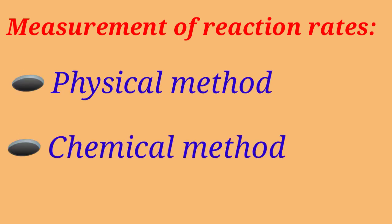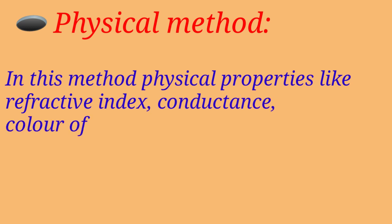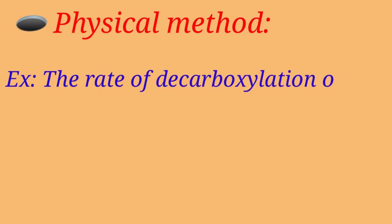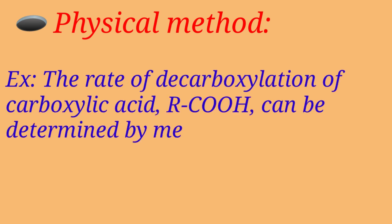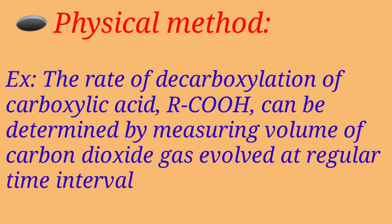Rate of reaction can be measured by two methods: physical method and chemical method. In physical method, physical properties like refractive index, conductance, color of reaction mixture, optical rotation, volume of gaseous product formed is measured at regular interval. For example, the rate of decarboxylation of carboxylic acid can be determined by measuring the volume of carbon dioxide gas evolved at regular interval. So we have to keep on checking the volume of carbon dioxide at regular interval.